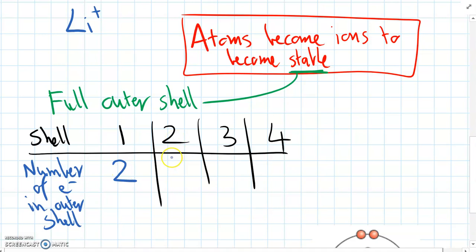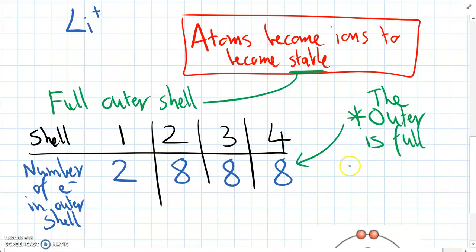The second shell, remember, it can only hold eight as its maximum. And eight is actually the magic number. So other than the first shell, every other shell, when it's an outer shell, can only hold eight electrons.